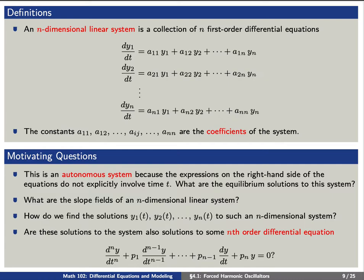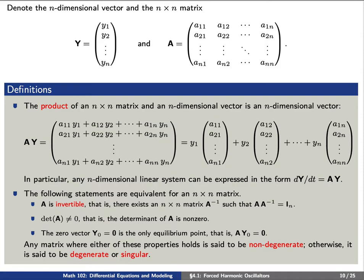We have a few motivating questions based on this system. This is an autonomous equation because the right-hand side does not explicitly involve time t, so what are the equilibrium solutions to this system? How do we find some solutions y1, y2, yn to such an n-dimensional system? And are our solutions to the system also solutions to some nth order differential equation?